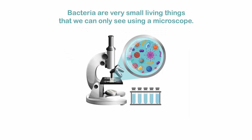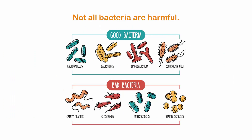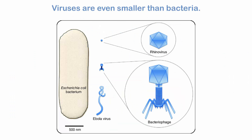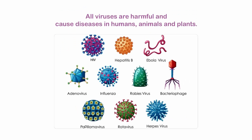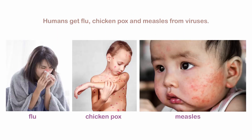Bacteria are very small living things that we can only see using a microscope. Bacteria cause diseases such as cholera and pneumonia, but not all bacteria are harmful. Viruses are even smaller than bacteria. All viruses are harmful and cause diseases in humans, animals and plants. Some viruses even infect bacteria. Humans get flu, chickenpox and measles from viruses.